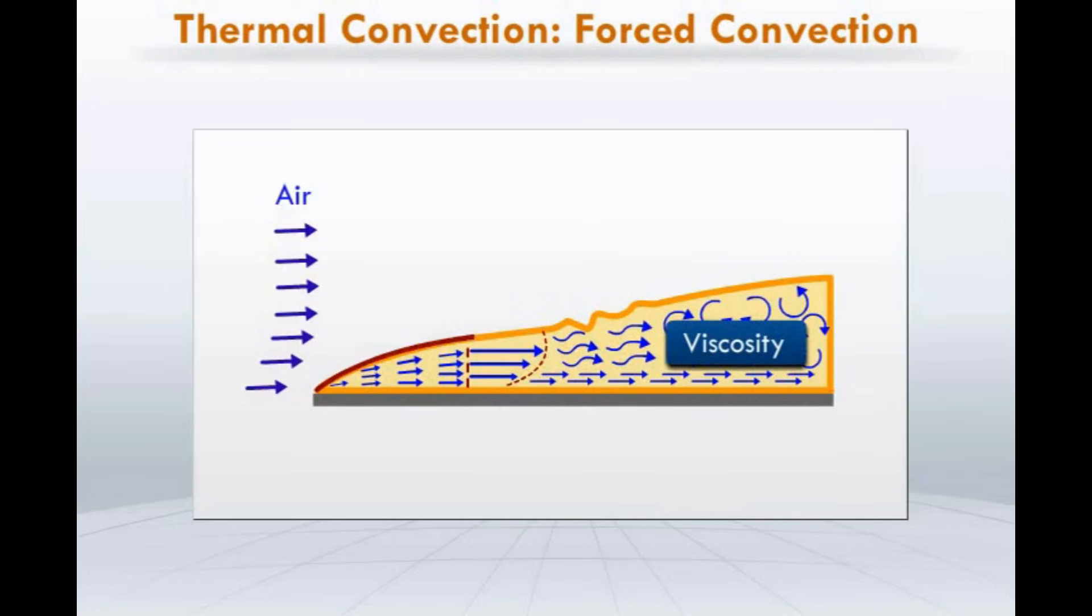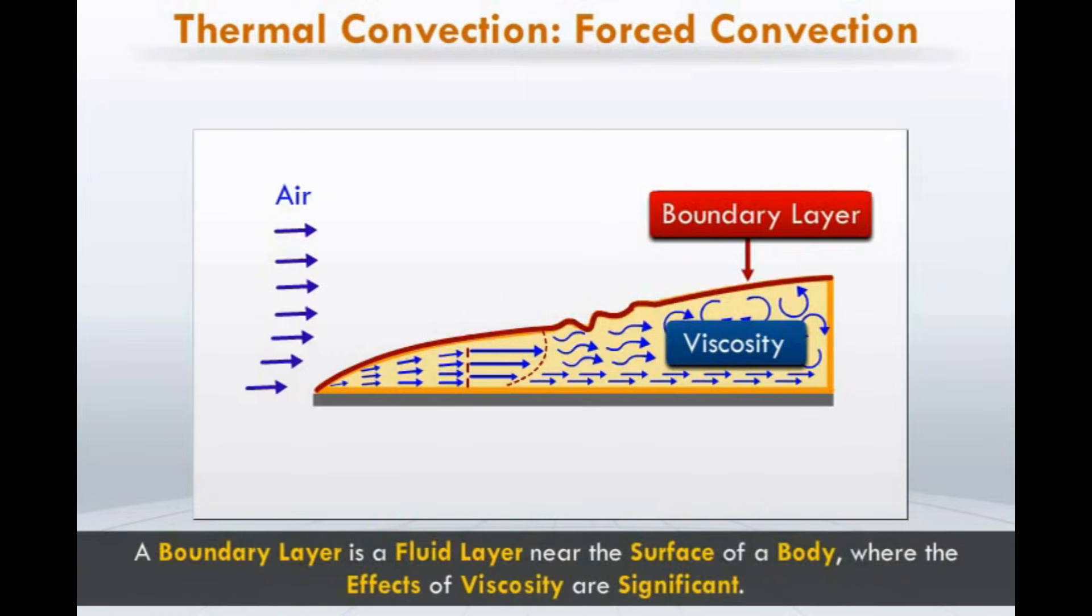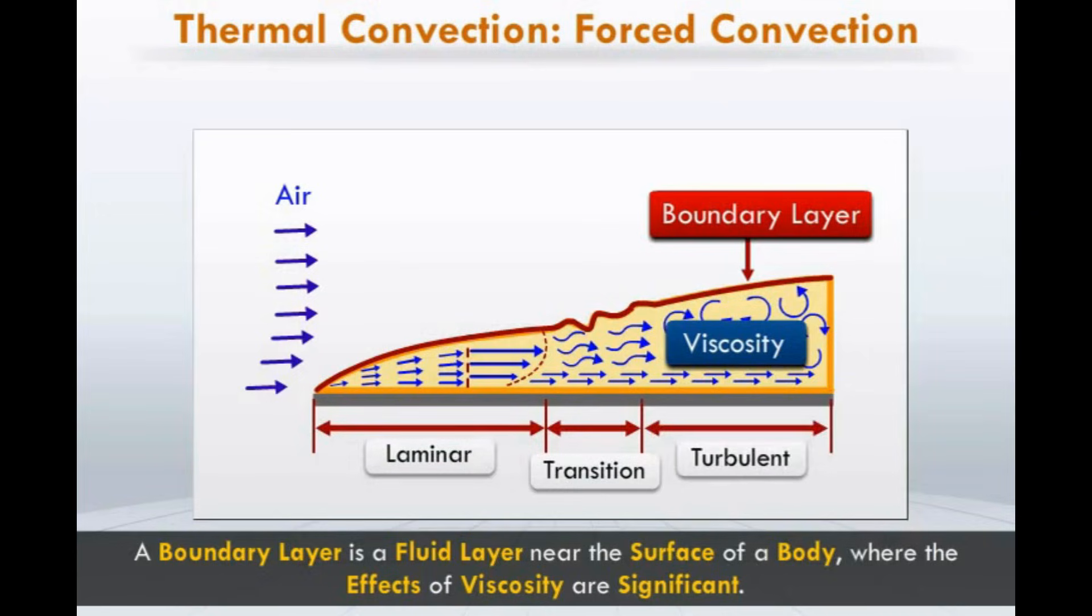This parabolic layer of air where the viscosity effects are felt is known as the boundary layer. It consists of three zones: laminar zone, transition zone, and turbulent zone.